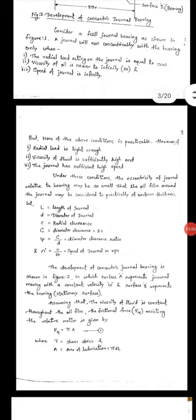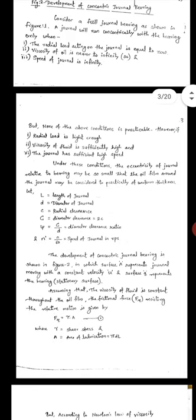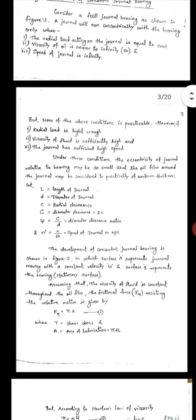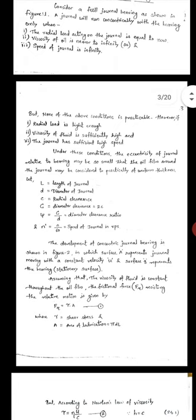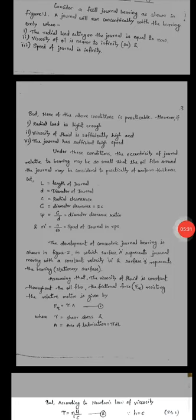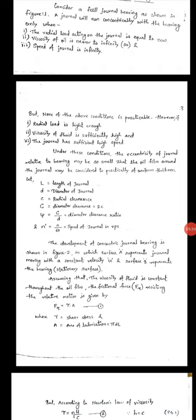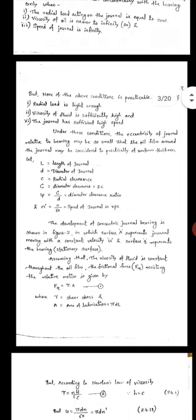The development of the concentric journal bearing is shown in figure 2, where surface A represents the journal moving with constant velocity U and surface B represents the bearing, the stationary surface. Assuming that the viscosity of fluid is constant throughout the oil film.